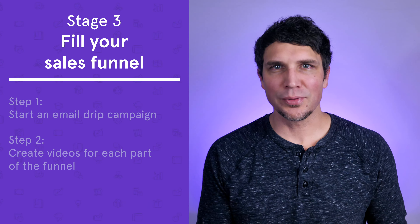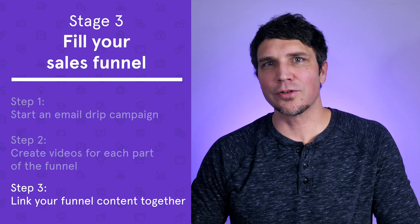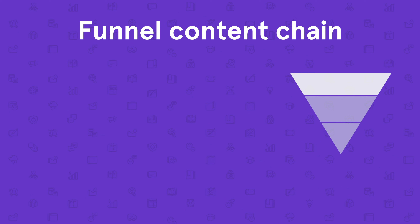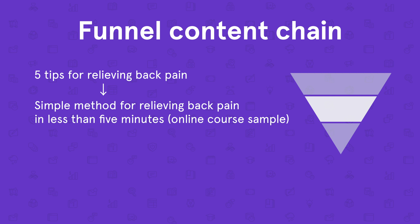Step three: link your funnel content together. The purpose of the funnel is to create a path for your viewer to move from being aware of your product or brand to making a purchase. Your top of funnel content has to connect to your middle of funnel content, and your middle of funnel content has to connect to your bottom of funnel content. As you're creating videos or other types of content, look for opportunities to naturally direct your viewer to a piece of content further down the funnel. For example, maybe you've got a top of funnel video with five tips for relieving back pain, and that links to a middle of funnel video showcasing a simple method for relieving back pain in less than five minutes that samples content from your online course. This video could then link to a bottom of funnel promotional video for your course. You can even link from video to blog articles or from blog articles to podcasts, as long as the path feels like a natural progression. The more complete your sales funnel is, the more effective it'll be at converting viewers to customers.